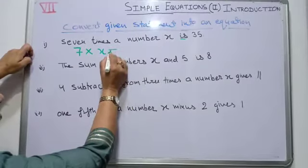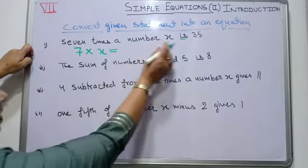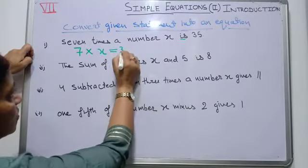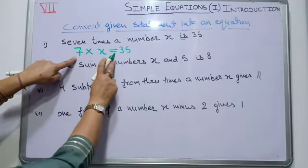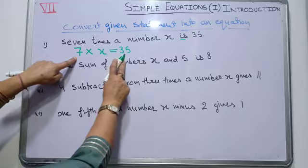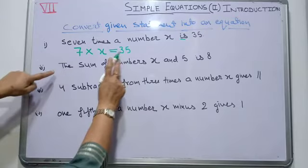This is equal to 35. So, 7 multiplied by x is 35. Now, come to the second example.